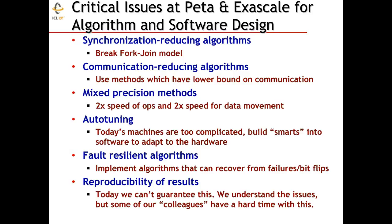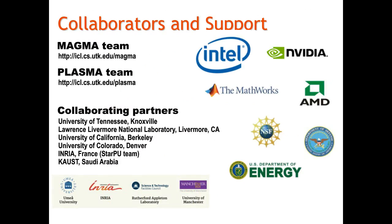The algorithms we develop should have error bounds associated with them so we know when results are correct. In the future, we may need to ensure reproducibility because the application demands it, or because when debugging programs we'd like assurance that the program does the same thing on successive runs. With that, I'll conclude. The work I've talked about comes through support from many organizations and collaboration with colleagues at the University of Tennessee and at other laboratories around the country and around the world. So with that I will stop and we can ask some questions.